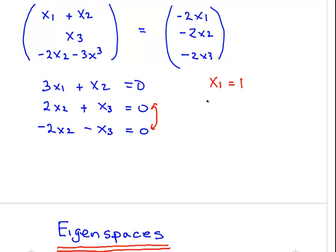x2, necessarily, is going to be minus 3, and x3 is going to be equal to 6. The answer, properly, is this is the eigenspace. It's multiples. We don't know these numbers, but we know that the proportions are right.